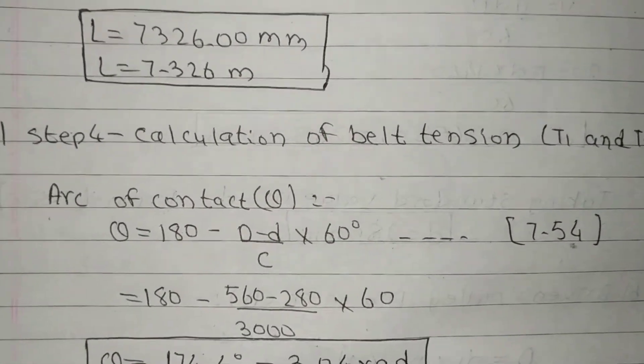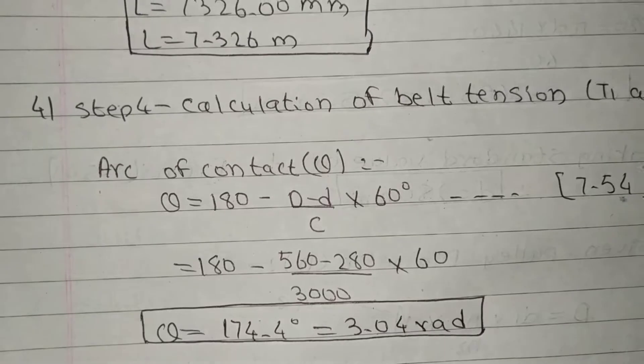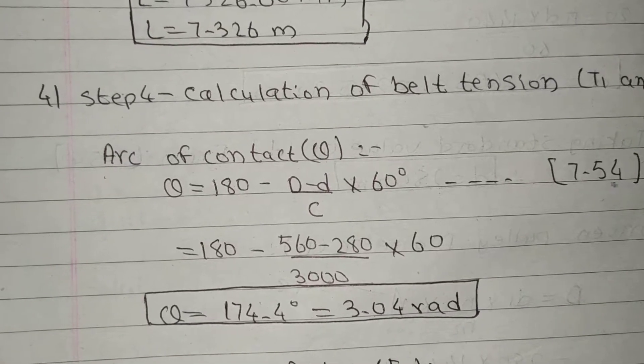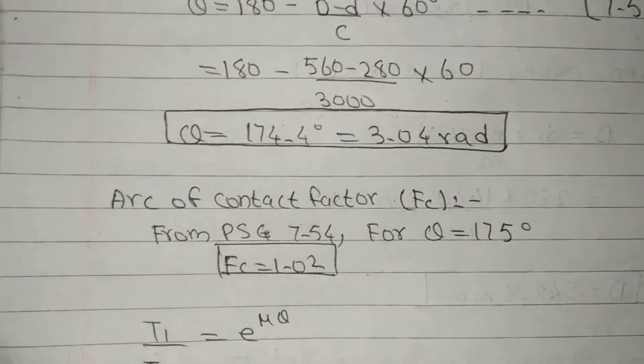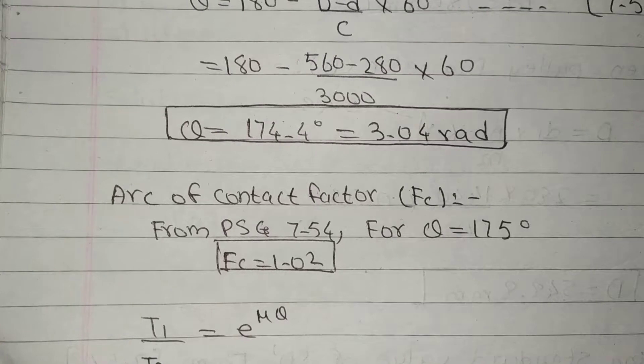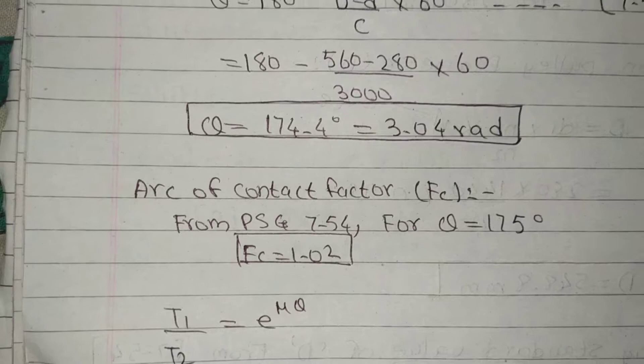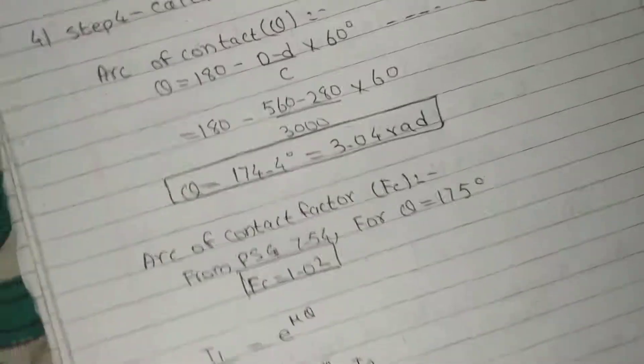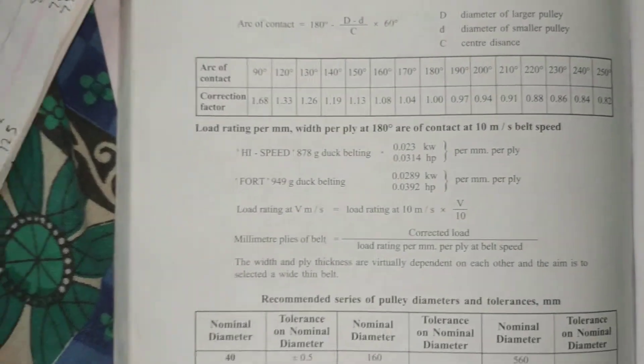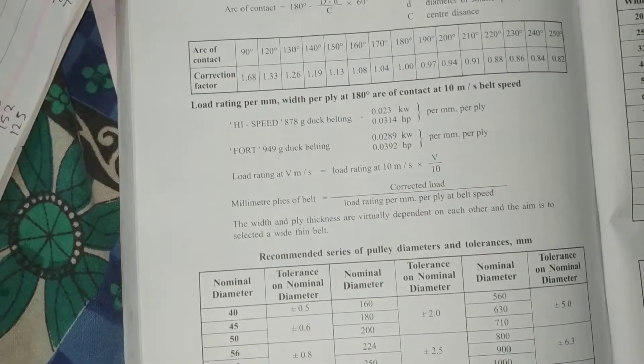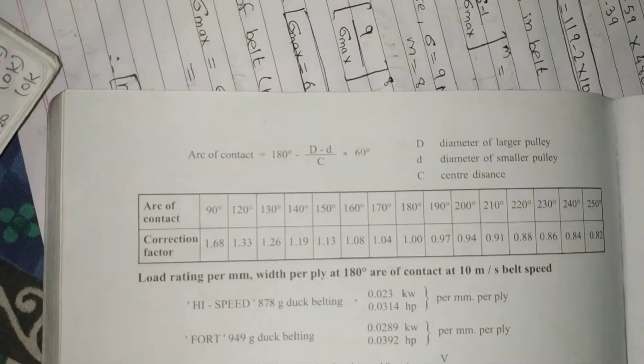Step 4: Calculation of belt tension T minus theta. This formula is PSG 7.54: 180 minus D minus d upon C into 60 degrees. Theta in degrees, this is in radians. Arc of contact factor Fc. What is Fc? Fc from PSG 7.54.